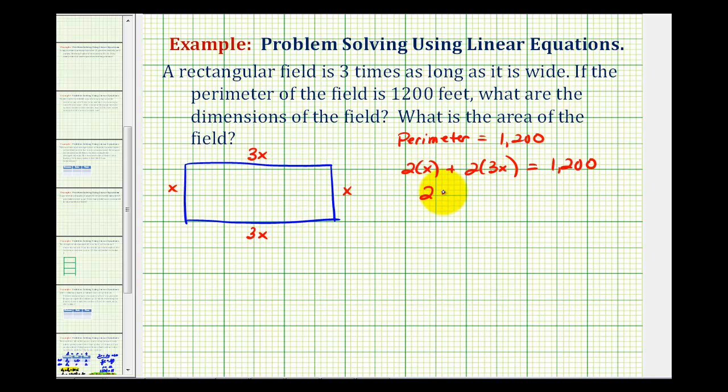So here we'd have 2x plus 6x equals 1,200. So combining like terms we have 8x equals 1,200.